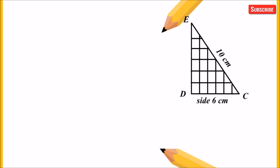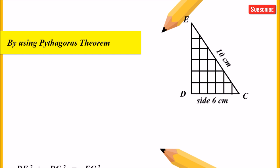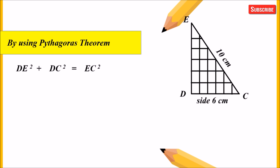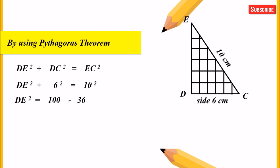We have only the shaded portion, which is a right-angle triangle with hypotenuse 10 centimeter and one side 6 centimeter. We can find the other side using the Pythagorean theorem: DE squared plus DC squared equals EC squared. Putting the values: DE squared plus 36 equals 100, so DE squared equals 100 minus 36, which gives DE squared equals 64. The square root of 64 is 8.